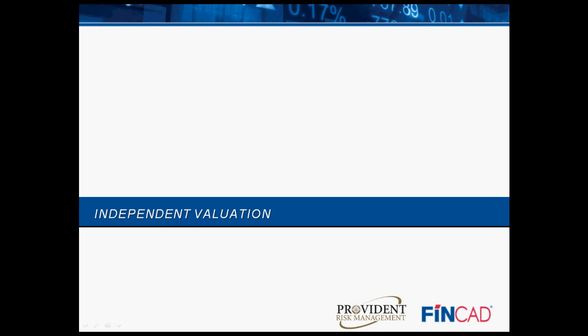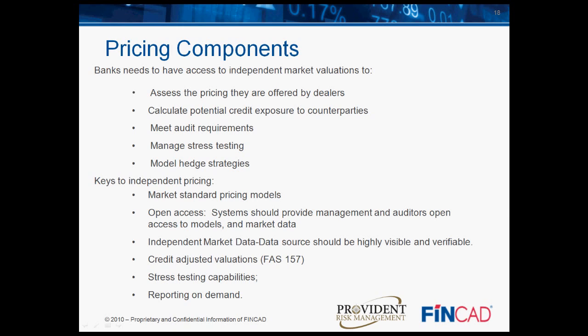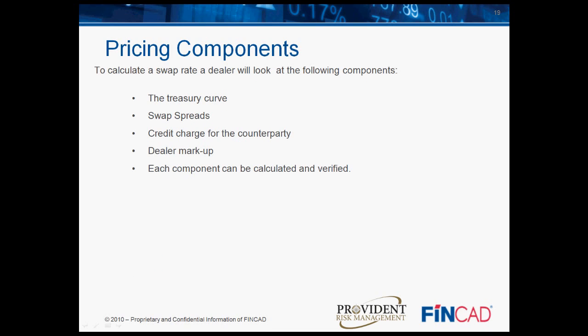I'd like to take a minute to talk about the importance of independent valuation. Independent market valuations allow a bank to verify dealer pricing, to carry out independent analysis of credit and market risk, to model potential strategies, and to meet auditor requirements. An independent pricing service should use standard models, provide open access to models, documentation, and data, and should be able to meet FAS 133 and 157 requirements. A system should support credit exposure calculations and provide reporting on demand. To calculate a swap rate, a dealer will look at the treasury curve, swap spreads, internal credit charges for the counterparty, and a dealer markup or dealer revenue. Each component of a swap price can be calculated and should be verified.